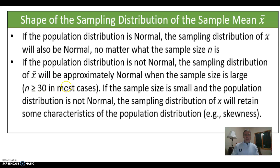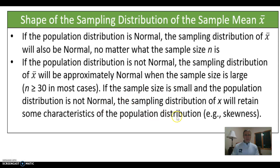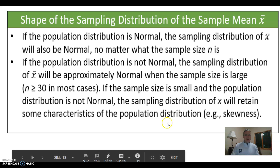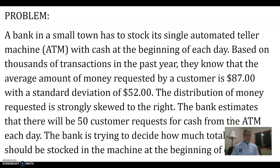On the AP test they might give you a sample size of 40 or 50, and you could say you know the sample mean is approximately normal. Be careful about small sample sizes: if the population is not known to be normal, the sampling distribution will retain some characteristics of the population distribution like skewness, and then we cannot do a normal calculation.